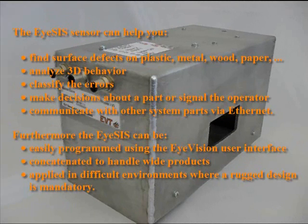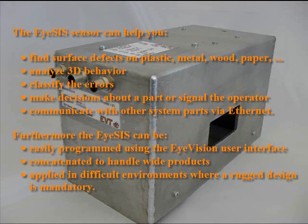The iSIS sensor can help you find surface defects on plastic, metal, wood, and paper; analyze 3D behavior; classify the errors; make decisions about a part or signal the operator; and communicate with other system parts via Ethernet. Furthermore, the iSIS can be easily programmed using the iVision user interface, concatenated to handle wide products, and applied in difficult environments where a rugged design is mandatory.